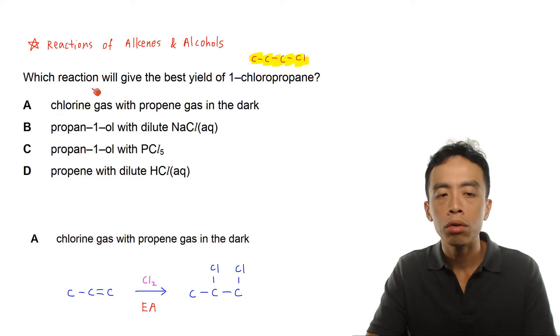Option A: chlorine gas with propene gas in the dark. Option B: propan-1-ol with dilute sodium chloride aqueous. Option C: propan-1-ol with PCl5. And option D: propene with dilute HCl aqueous.